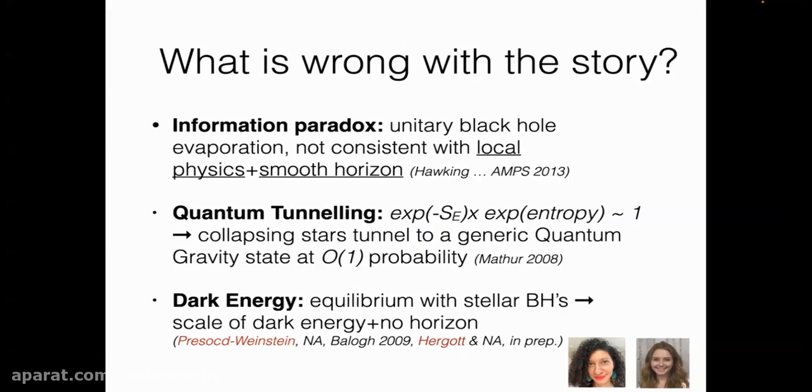There are slightly more nuanced versions of the problem. One is quantum tunneling. Deviations from semi-classical gravity are expected to be exponentially suppressed. If you think the entropy is counting of the number of states, the exponential of entropy is also very big. The product of these two is over one. Based on this, Samir Mathur has argued that as soon as you form the horizon, you can tunnel to a very non-classical state.